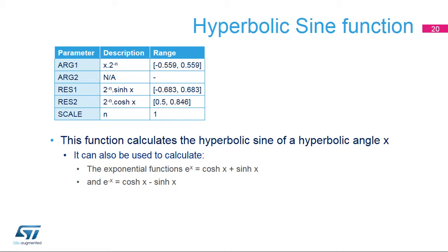This slide describes the features of the hyperbolic sine function. The primary argument is the hyperbolic angle x. Only values of x in the range minus 1.118 to plus 1.118 are supported. For all input values, a scaling factor of 2 raised to the negative n must be applied in software where n = 1. The scaled value x times 0.5 is programmed in arg1 and the factor n = 1 must be programmed in the scale parameter. The secondary argument, arg2, is unused. The primary result, res1, is sinh x; res1 must be multiplied by 2 to obtain the correct result. The secondary result, res2, is cosh x; res2 must also be multiplied by 2.